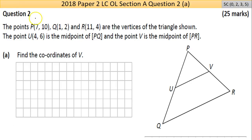Let's get stuck in. Question 2 says the points P(7,10), Q(1,2), and R(11,4) are the vertices, the corners of the triangle shown. So there's P, Q, and your R up here.